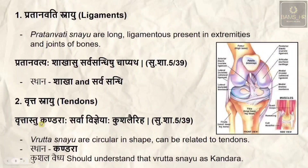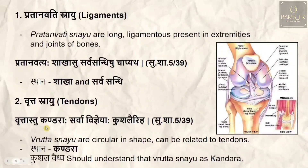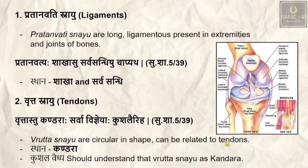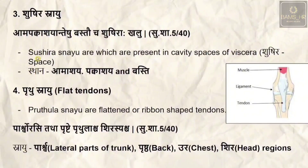The second type is vrutta snayu, which can be correlated with tendons. Vrutta means circular — acharya states vrutta astu khanda raha sarva vigneha kushala reha. All circular structures present in the body like tendons are khanda raha. Vrutta snayu are circular-shaped structures; tendons being semicircular or circular in shape are correlated with vrutta snayu.